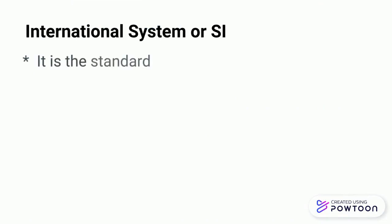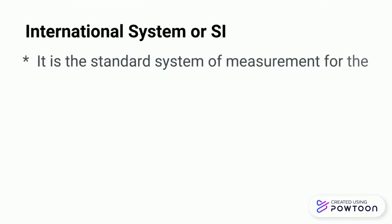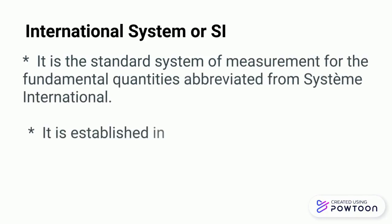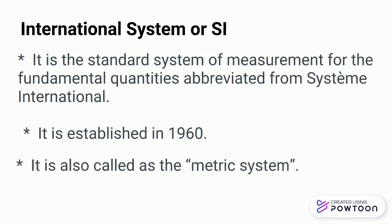What is the International System, or SI? It is a standard system of measurement for the fundamental quantities, derived from Système International. It was established in 1960 and is also called the metric system.